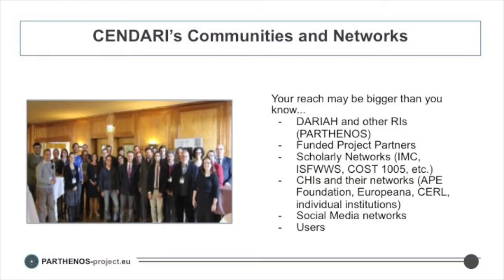The last set of assets we looked at were the communities and networks. Research infrastructures, because of their size, have a tendency to build communities around them, and they need to interact with communities to make sure they are embedded and able to reach a maximal level of reuse. The full reach of a research infrastructure may be bigger than you can even see from within it. For us, this included other research infrastructures, other funded projects, scholarly networks, cultural heritage institutions, aggregator networks, social media networks, and the users we brought into the project over time. We felt that to simply let these assets dissipate — this sense of common cause and shared understanding about what Sendari was and did — would have been a real loss of something that should have been built upon.